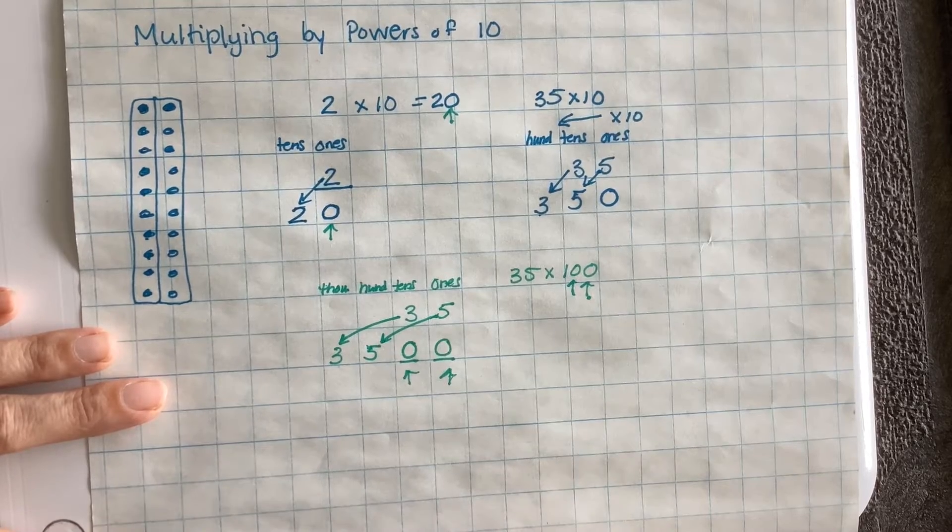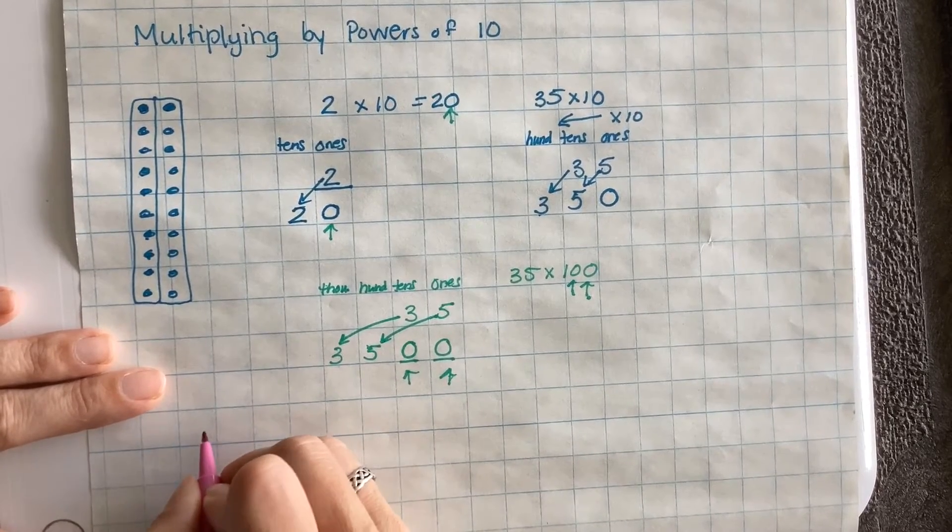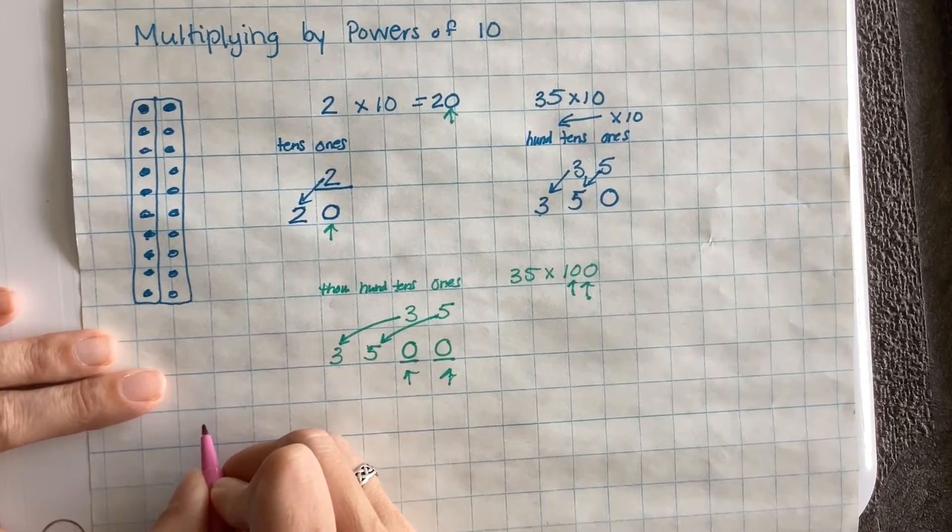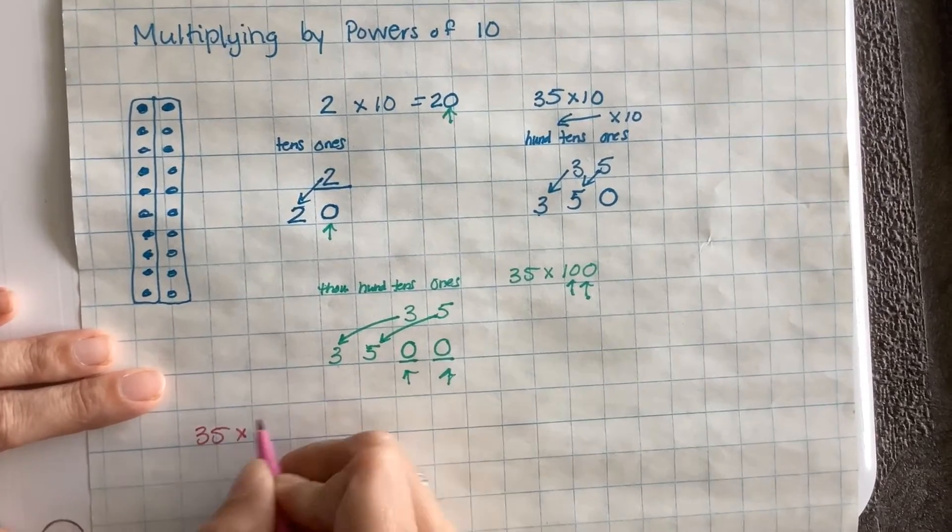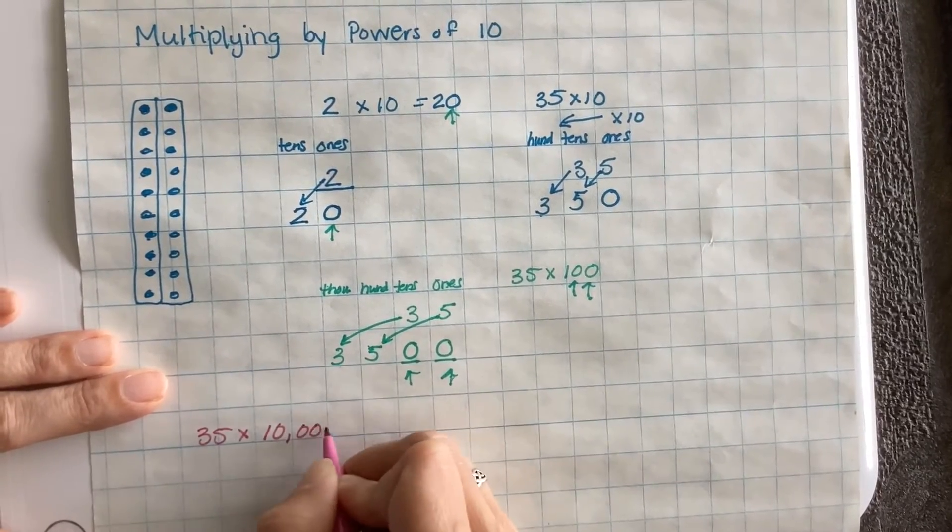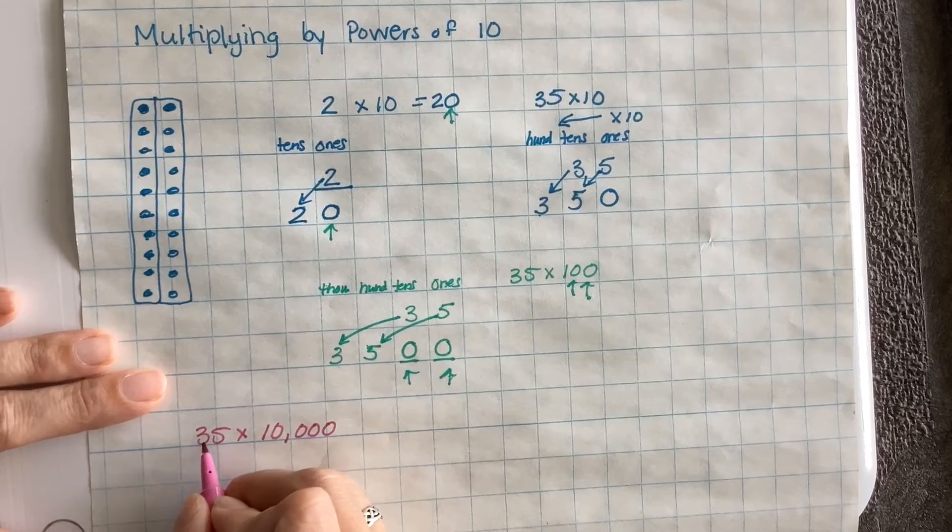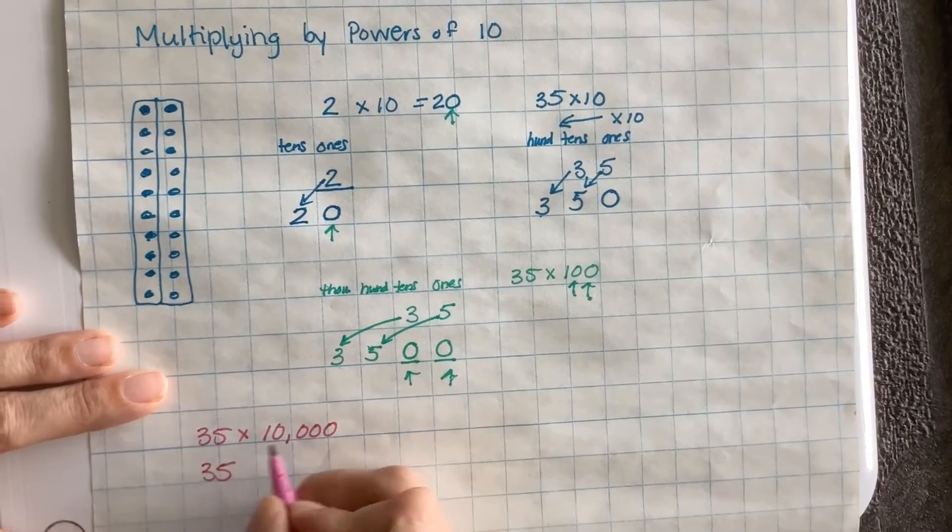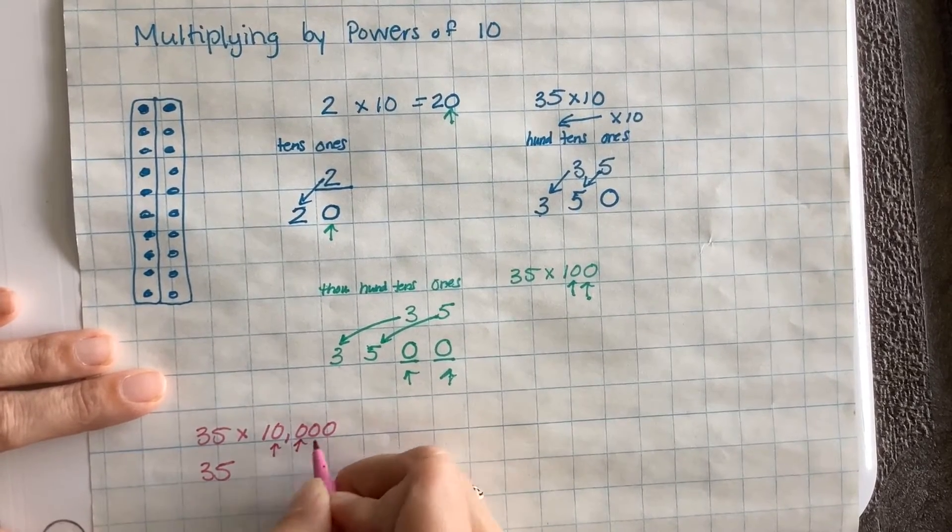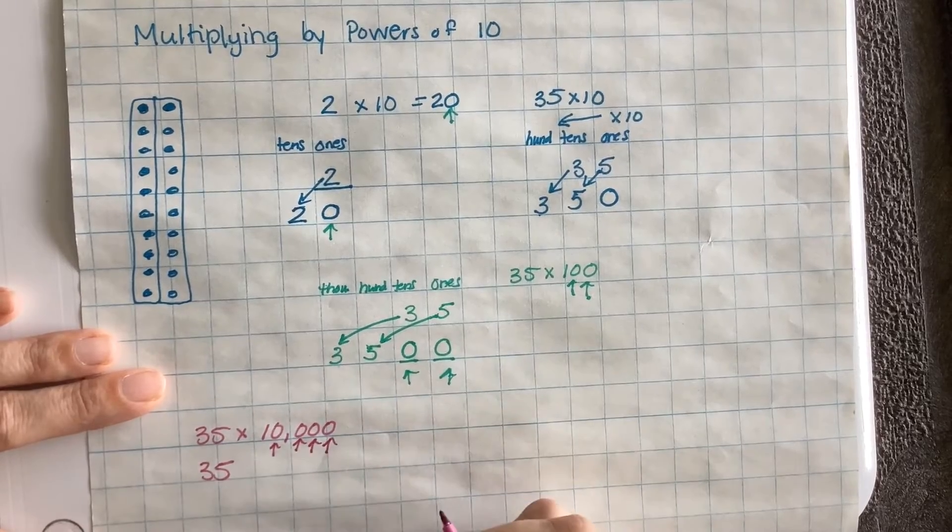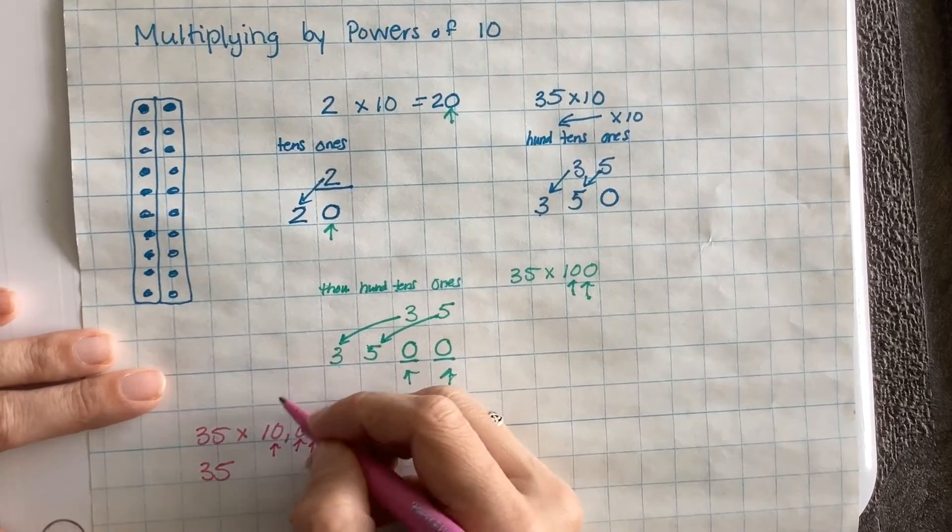So I'll give an example. If I wanted to do 35 times 10,000, I would have the 35 and 1, 2, 3, 4 powers of 10. And look how that works.